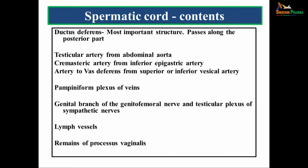The contents of the spermatic cord are very important. The most important content is the ductus deferens. Apart from that, there are arteries — the testicular artery from the abdominal aorta, the cremasteric artery from the inferior epigastric artery, and artery to vas deferens from the superior or inferior vesicle artery. There is also the pampiniform plexus of veins, the genital branch of the genitofemoral nerve, testicular plexus of sympathetic nerves, lymph vessels, and remains of the processus vaginalis.